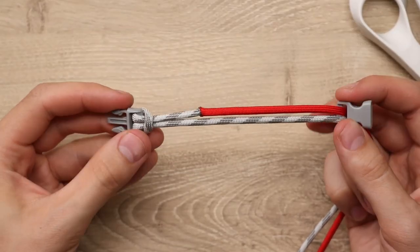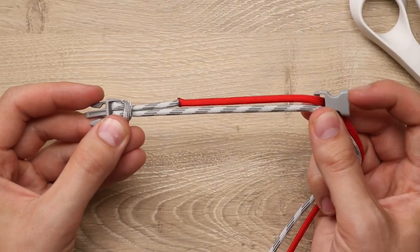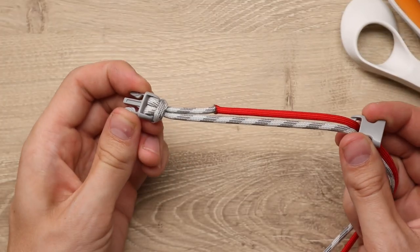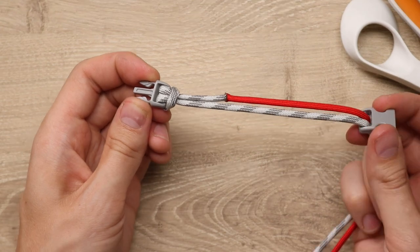Like with other weaves of paracord bracelets, you just want to measure from the end of this buckle to the base of the teeth on this side. And that's usually going to be one inch longer than your wrist measurement.